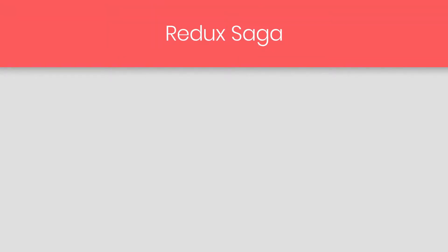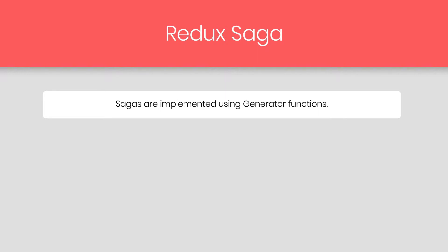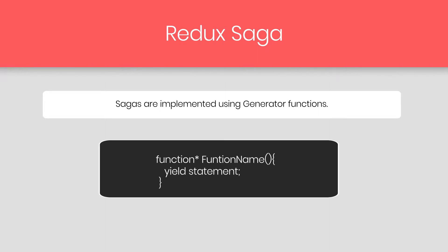Redux Sagas are implemented using generator functions. To create a generator in JavaScript, we first specify the function keyword followed by the asterisk that defines the generator function. Generators are functions that can be exited and later re-entered. The generator function's body is executed until the first yield expression, which specifies the value to be returned from the iterator.